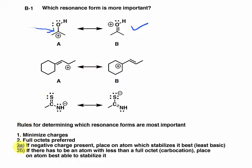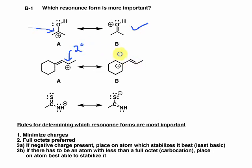So let's go to rule three. Negative charge isn't present here, but there is an atom with less than a full octet — a carbocation. The rule says to place the carbocation on the atom best able to stabilize it. Between A and B, is one of these positive charges more stable? The carbocation in A is on a secondary carbon, whereas in B it's on a tertiary carbon. So B is the more stable and more important resonance form, making a greater contribution to the resonance hybrid.